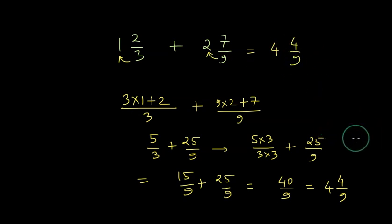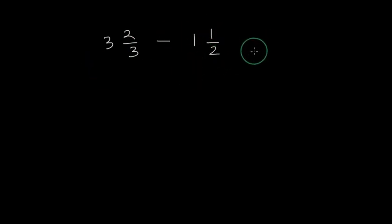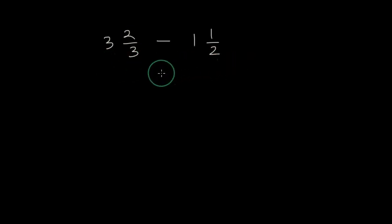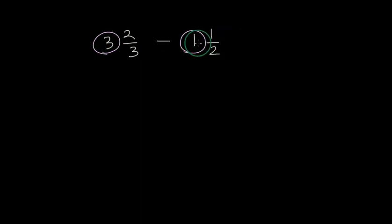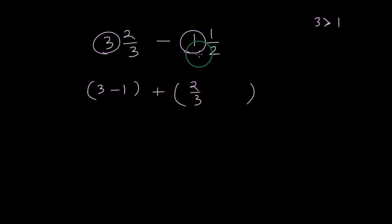Now let's see how we can do subtraction. Let's say we have 3 wholes and 2/3 minus 1 whole and 1/2. The safest method for subtraction of mixed fractions is to convert them into improper fractions. But let's see another way. You need to look at the whole parts first — see if the left-hand side is greater than the right-hand side. We indeed see that 3 is greater than 1, so we can safely subtract these two, then put a plus sign and perform the subtraction of the fraction part.